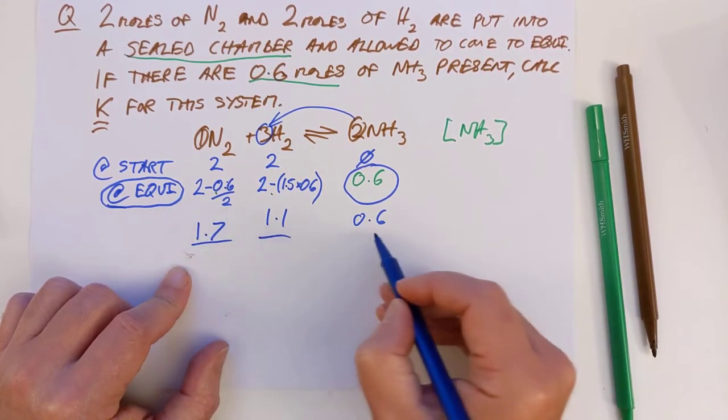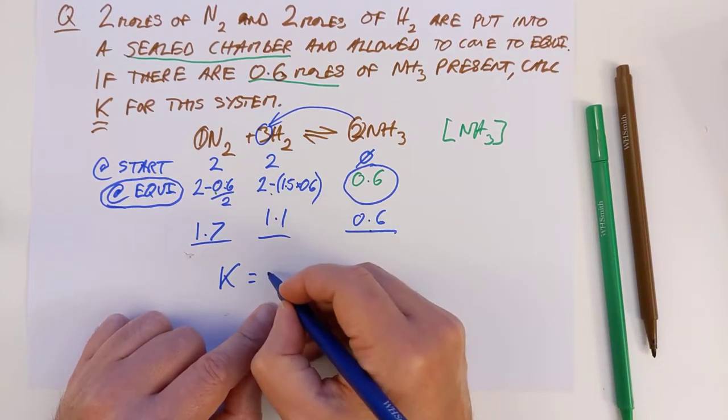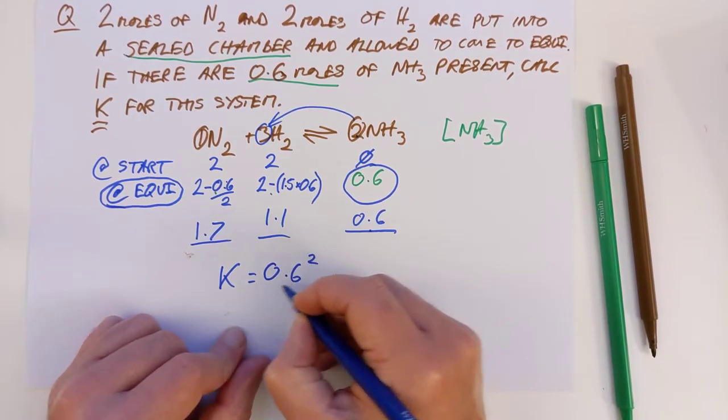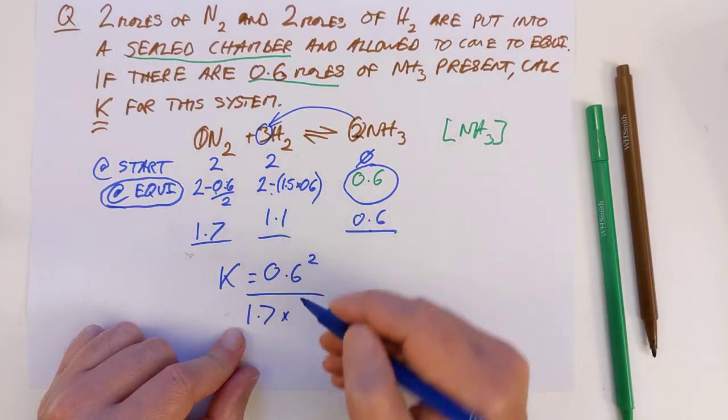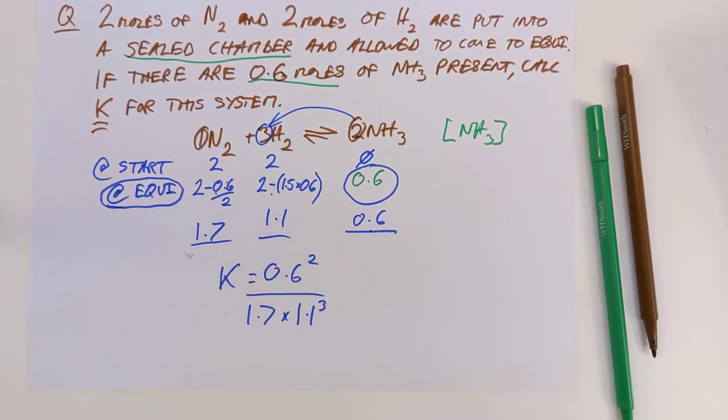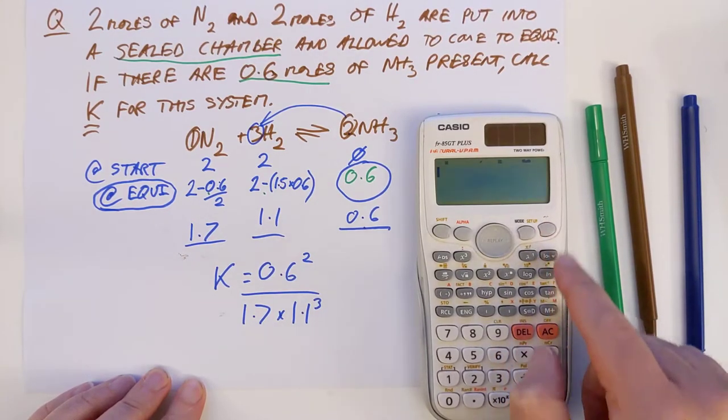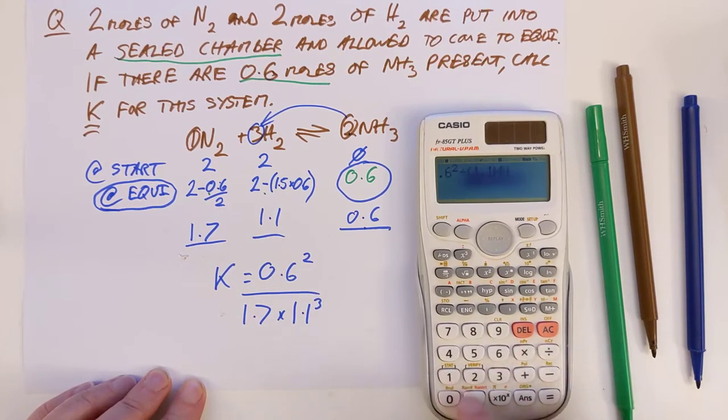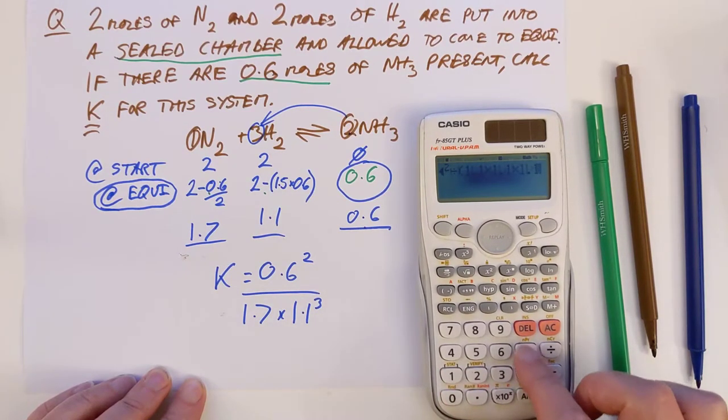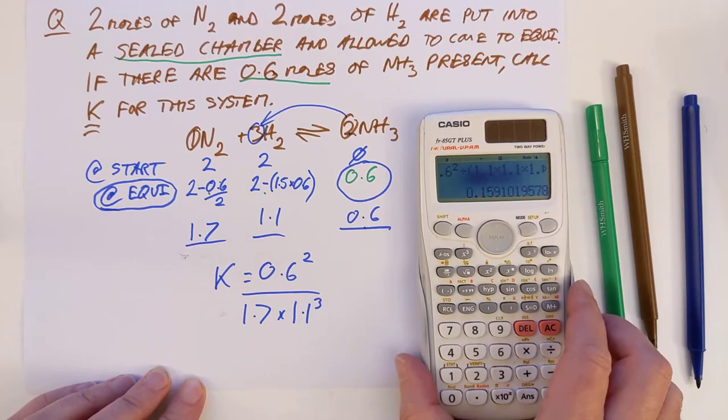So these are the moles of three chemicals at equilibrium point, which means we can feed them into our little expression, which was the concentration of ammonia to the power of 2. So that will be 0.6 squared over 1.7 just to the power of 1 times 1.1 cubed. I will need a calculator for that one. We get 0.6 squared divided by 1.1 times 1.1 times 1.1 divided by 1.7. We get 0.159 to three significant figures. So that's the value of K.